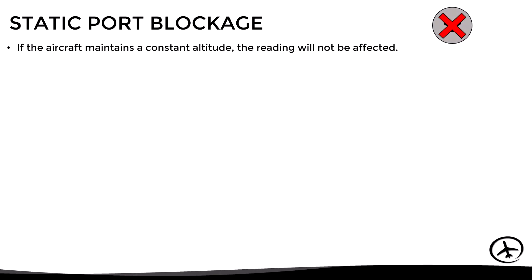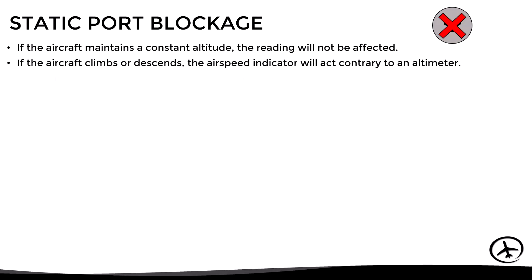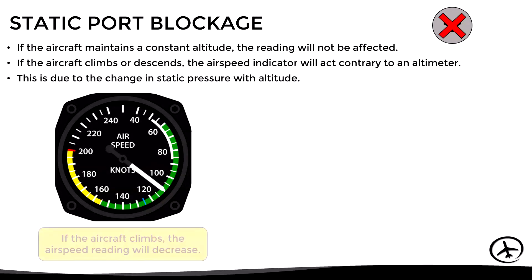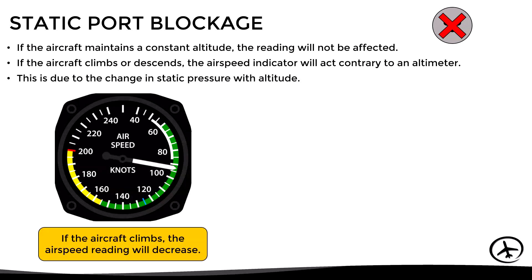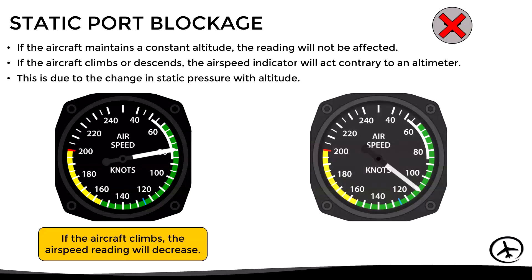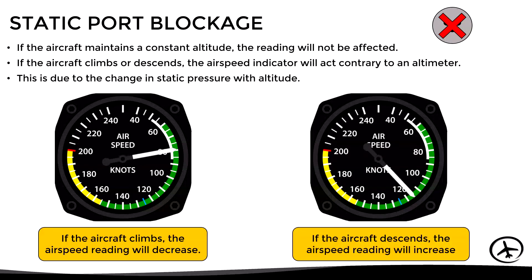Now let's see how the instrument reacts to a static port blockage. As long as the aircraft maintains a constant altitude, the airspeed reading will not be affected. However, if the aircraft climbs or descends, the airspeed indicator will act contrary to an altimeter — exactly the opposite reaction to a pitot tube blockage. If the aircraft climbs, the airspeed reading will decrease; if the aircraft descends, the reading will increase.